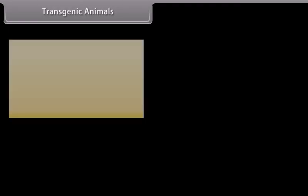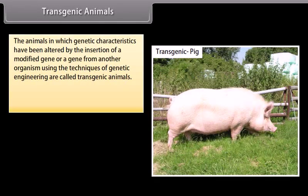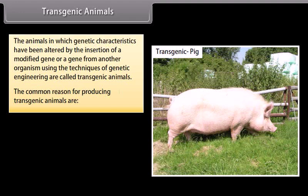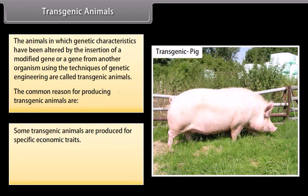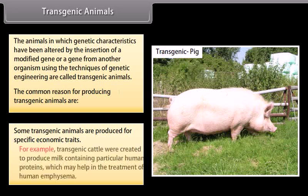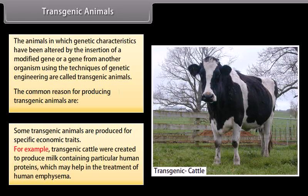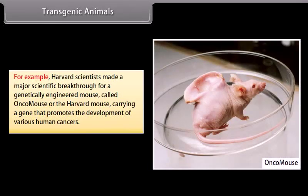Transgenic Animals: The animals in which genetic characteristics have been altered by the insertion of a modified gene or a gene from another organism using the techniques of genetic engineering are called transgenic animals. Transgenic animals are produced for specific economic traits. For example, transgenic cattle were created to produce milk containing particular human proteins which may help in the treatment of human emphysema. Harvard scientists also made a breakthrough with a genetically engineered mouse called Oncomouse, or the Harvard mouse, carrying a gene that promotes the development of various human cancers.